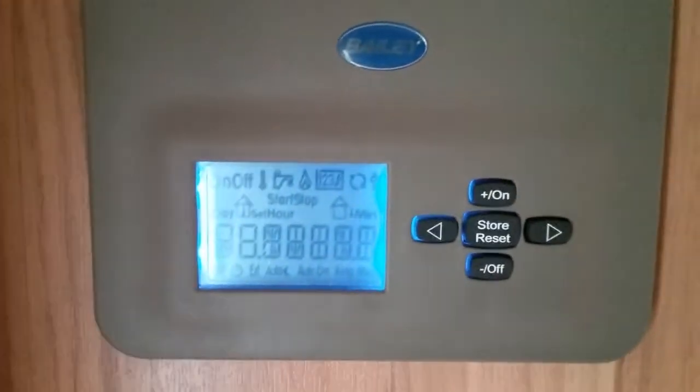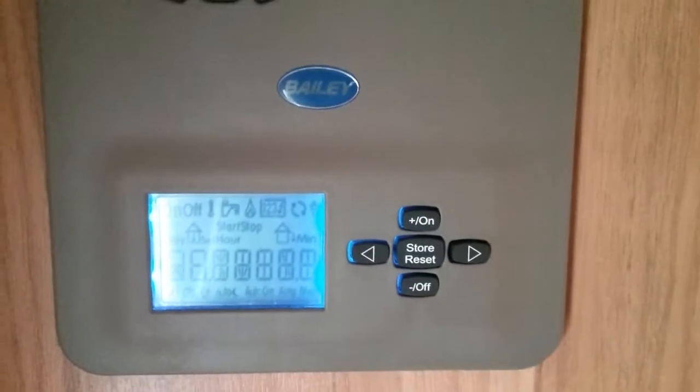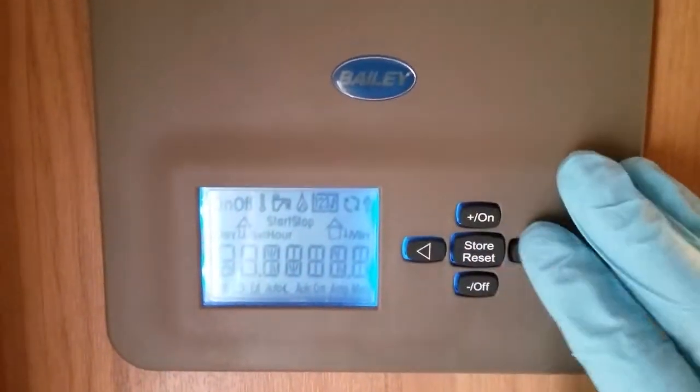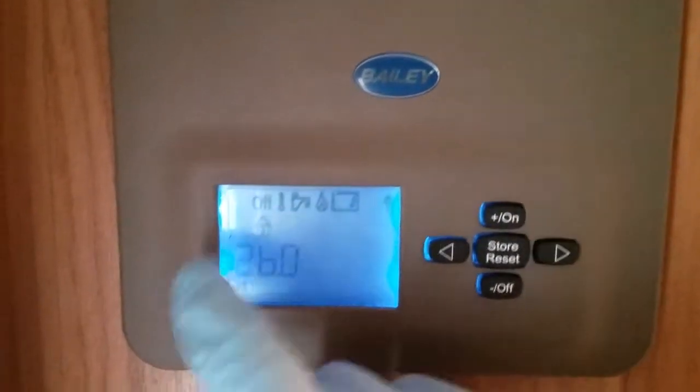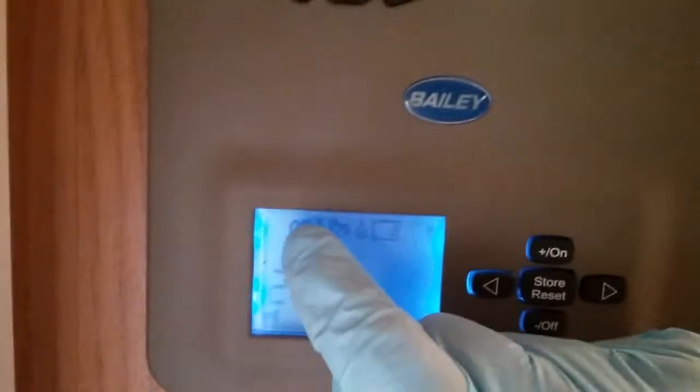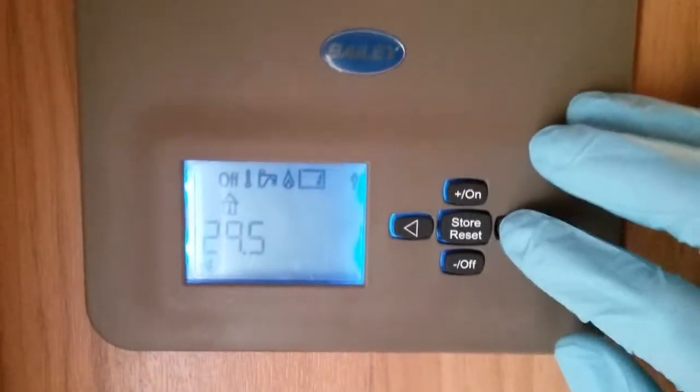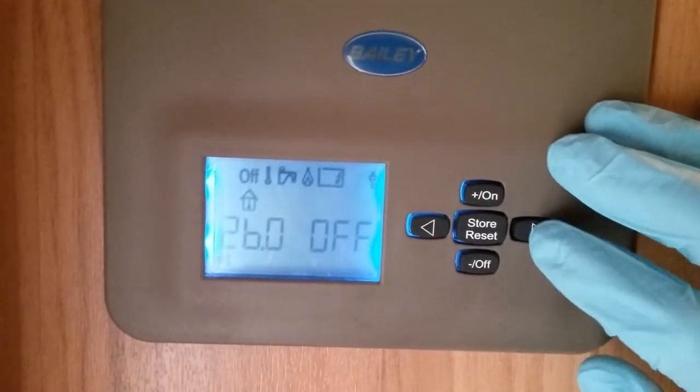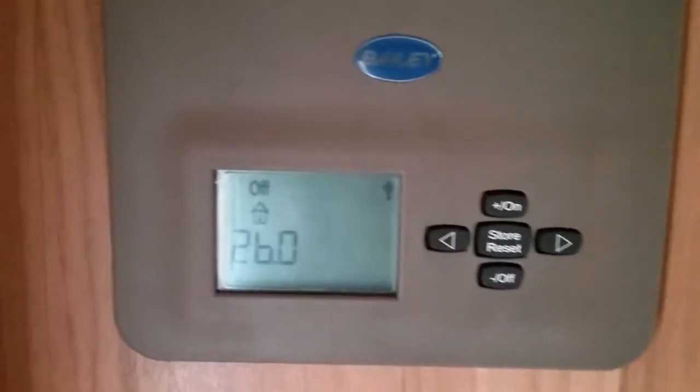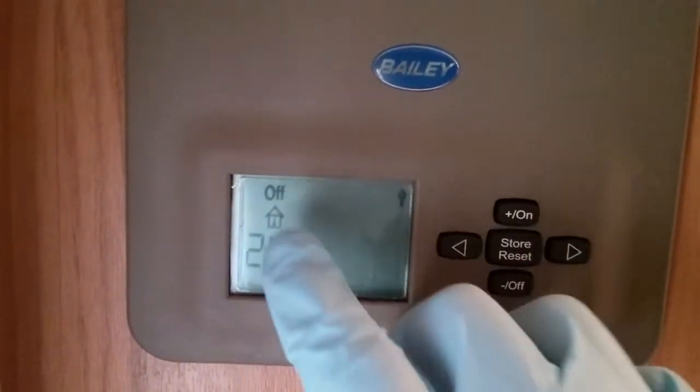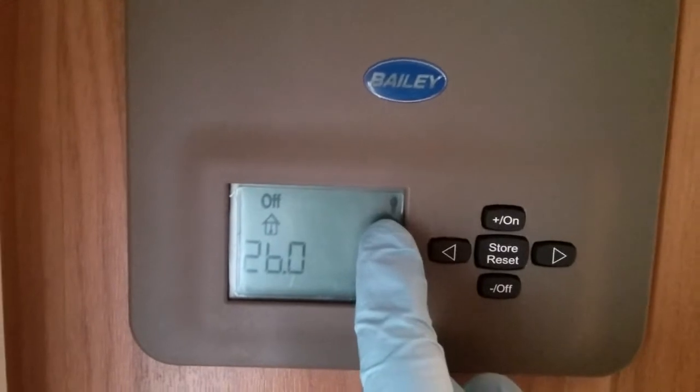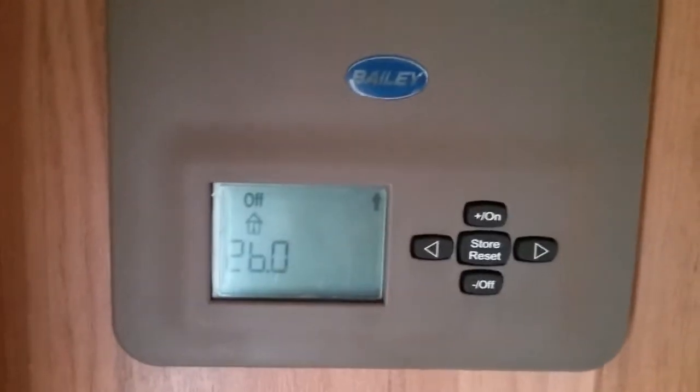If I now move just underneath that, we then have the controls for the Aldi heating and hot water. At the moment it's not working. All we just need to do is press any button on here and as you'll see you'll then get a series of little icons. So you'll see at the moment that the system is off. Then if I use the arrow we can go over all these different icons until we eventually end up back at off. Just down here it's giving us an internal temperature, and over here it's letting us know that we are currently hooked up to mains electricity.